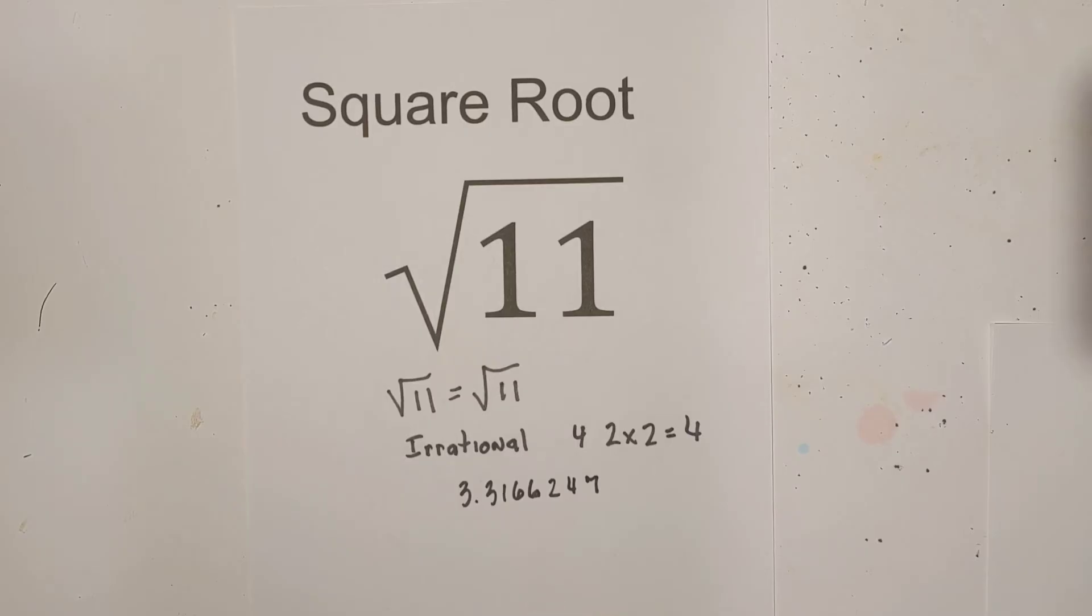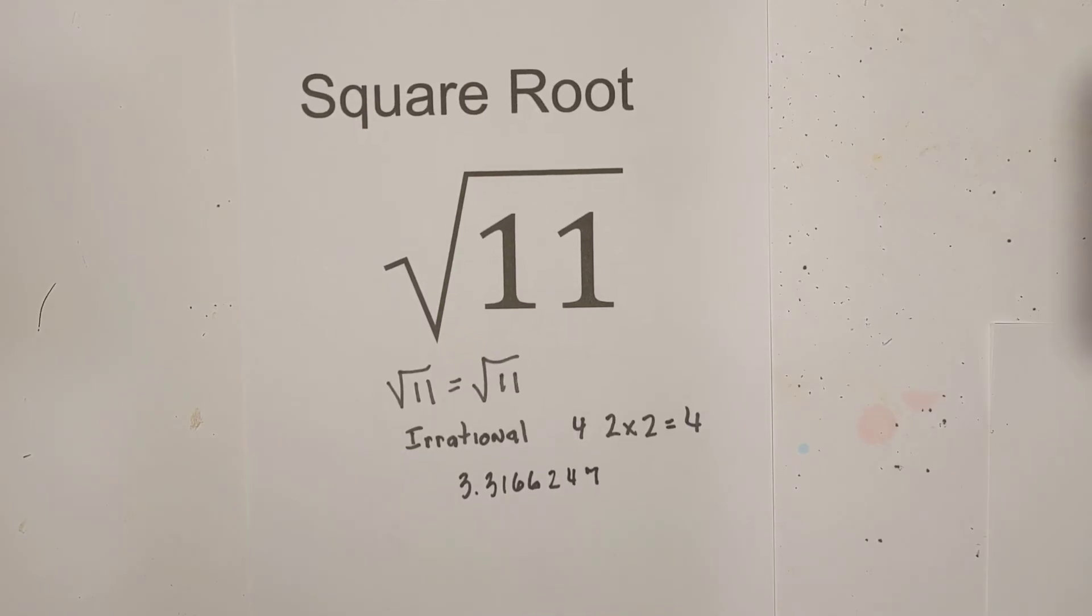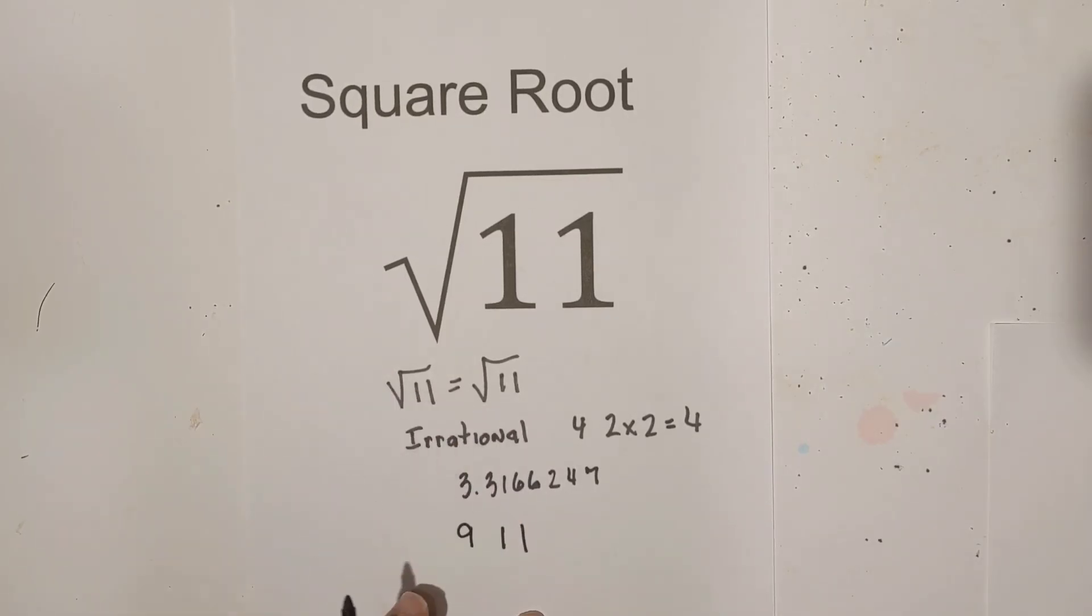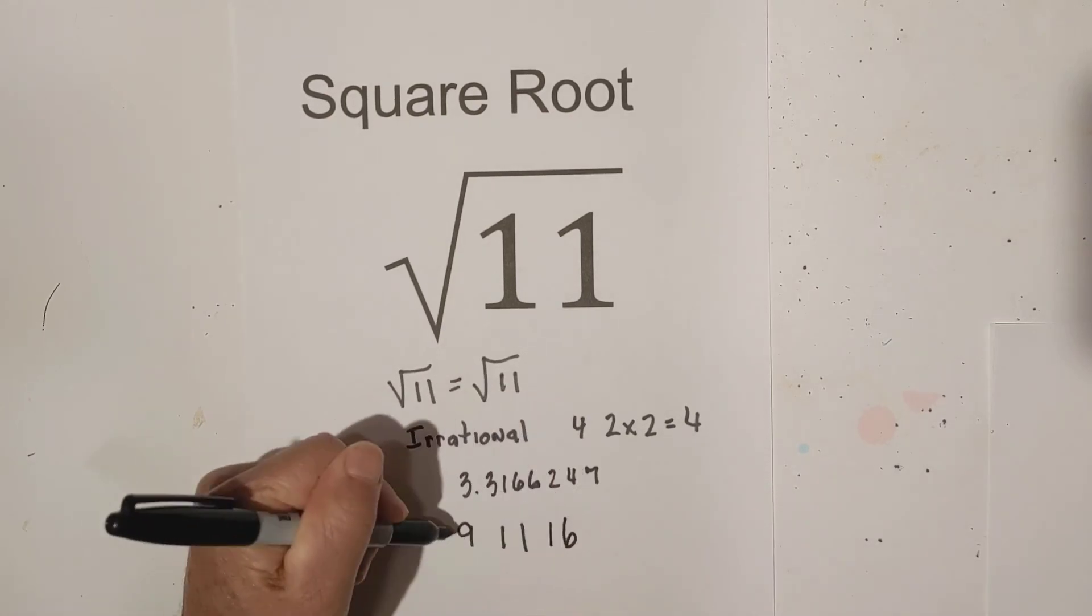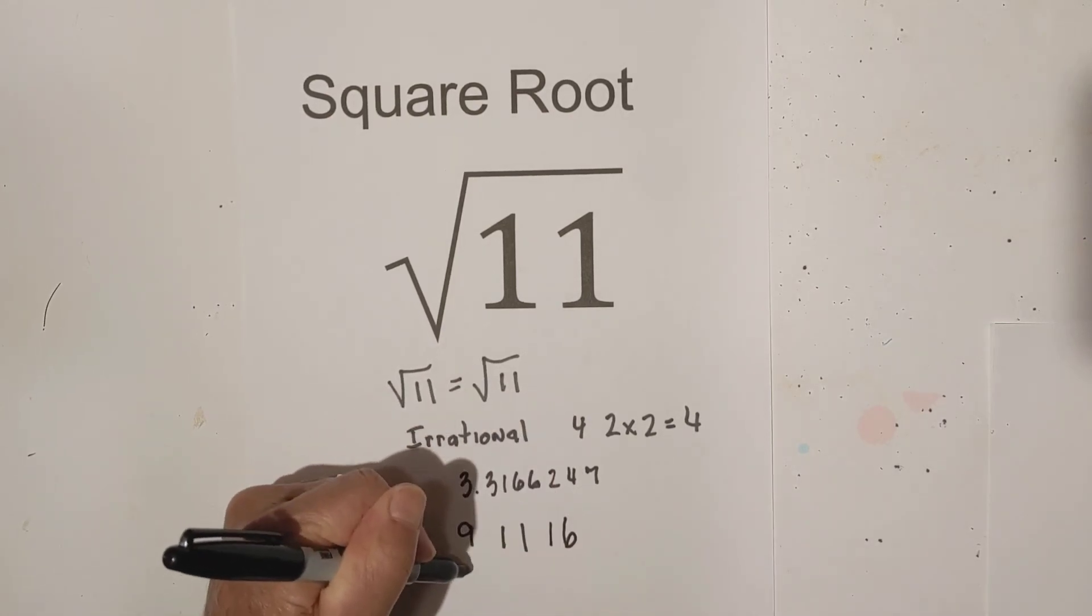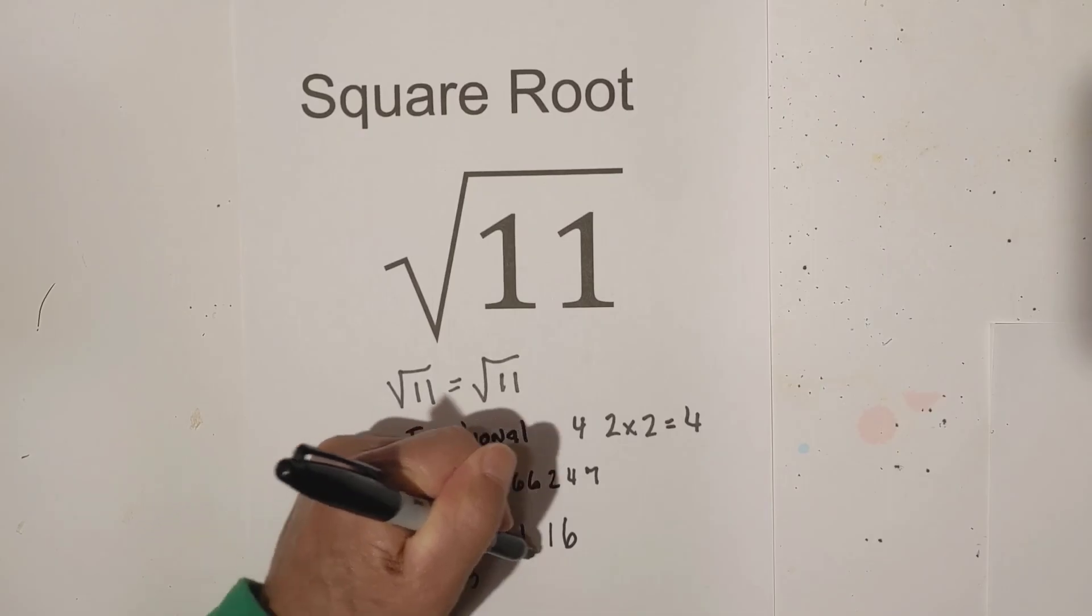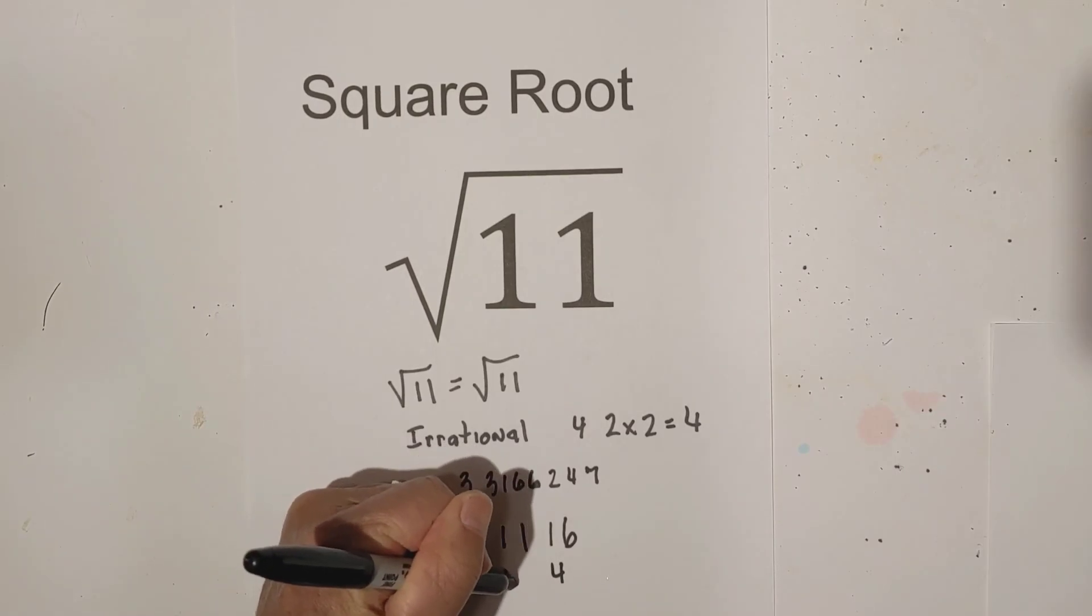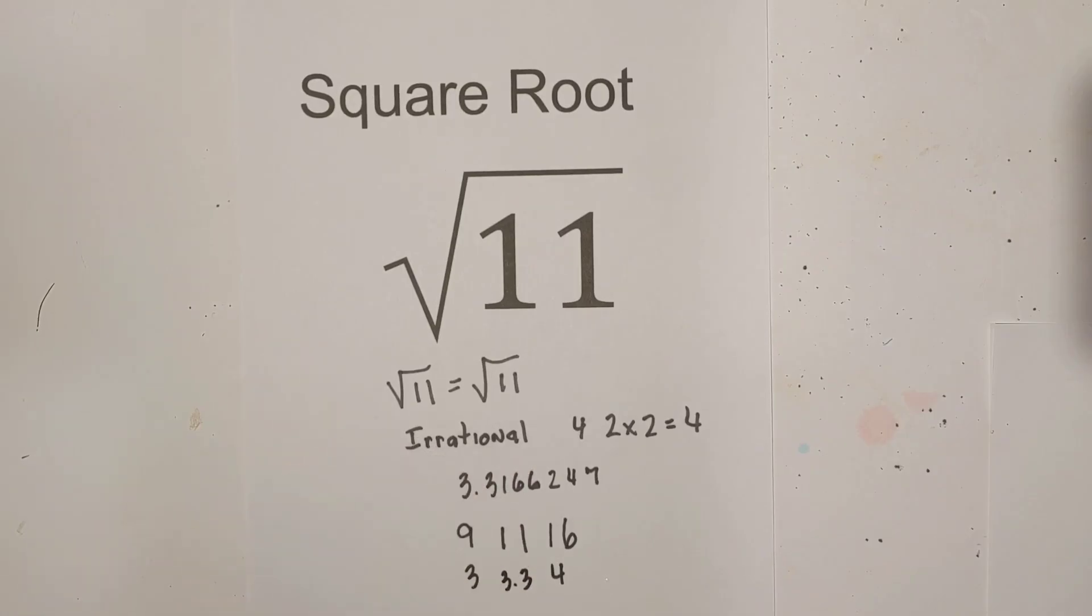Now, here is one trick if you need to estimate it. You have 11, you have 9, which is a perfect square, and then you have 16. So the square root of 9 is 3. The square root of 16 is 4. So you know that 11 is going to be somewhere between 3 and 4. It is kind of halfway between, so you could estimate it as 3.3 in decimal form.